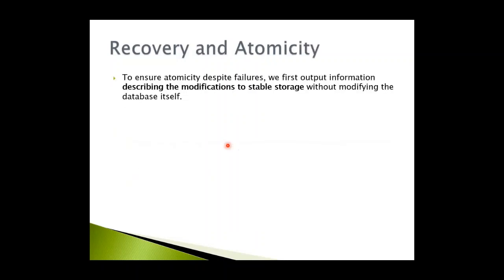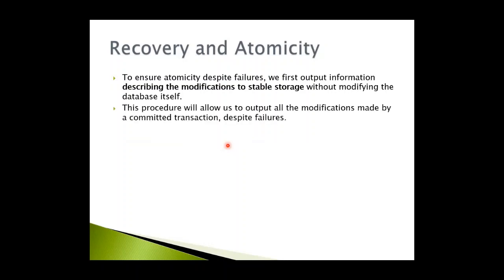To ensure atomicity despite failures, we first output information describing the modifications to stable storage without modifying the database itself. Whatever operations are performed with respect to different data items, we first store all modification information onto stable storage. This procedure allows us to output all modifications made by a committed transaction despite failures. Since we store all modifications onto stable storage without modifying the actual database, even if some failure happens, we will still be able to recover the modified data from stable storage.